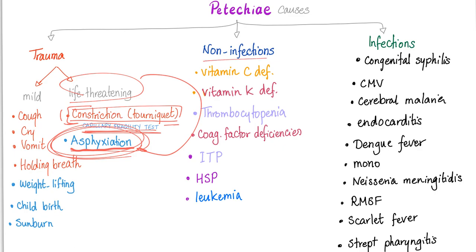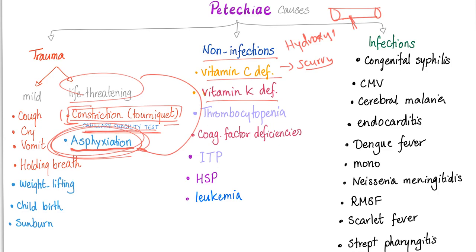Non-infectious causes include vitamin C deficiency, known as scurvy — you need vitamin C for hydroxylation of collagen fibers to make them strong, so without strong collagen you have weak blood vessels and you start to bleed. Vitamin K deficiency disrupts clotting factors 2, 7, 9, 10, protein C, and protein S. Other causes include thrombocytopenia, coagulation factor deficiencies, ITP, HSP (Henoch-Schönlein Purpura), and leukemia.